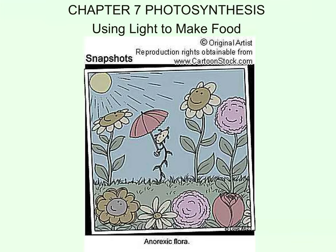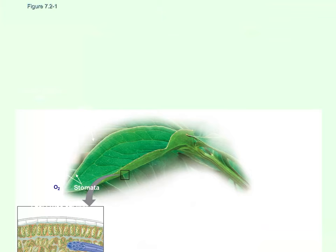We're going to look at chapter 7, photosynthesis — make sure you have your outline in front of you. We are going to start with the leaf structure. This is a leaf, and the leaves of plants will always have a cuticle on the top. If you go outside, you'll notice that the top of a leaf and the bottom of the leaf are going to be slightly different. The top of the leaf is going to be shiny.